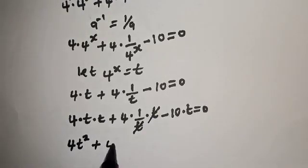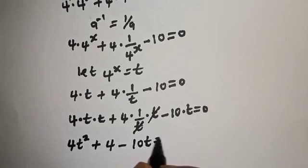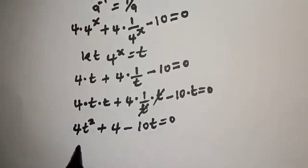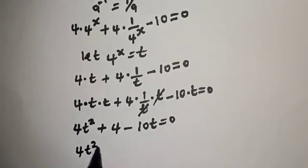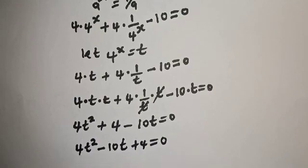Multiplying through by t and rearranging, we have 4t squared minus 10t plus 4 is equal to 0.